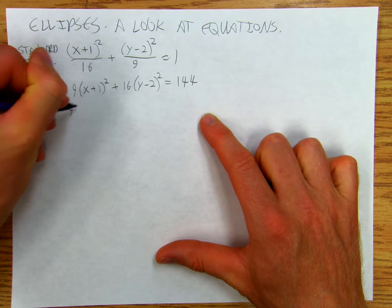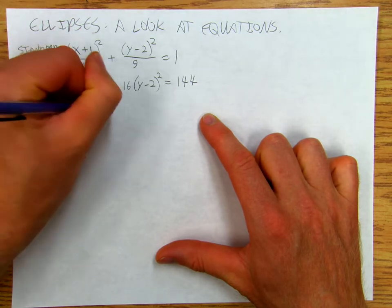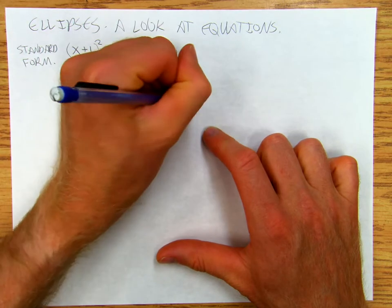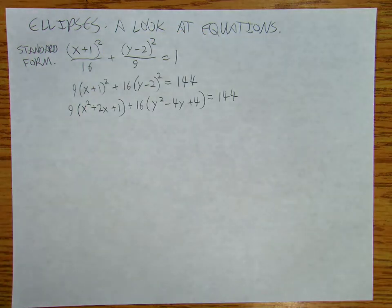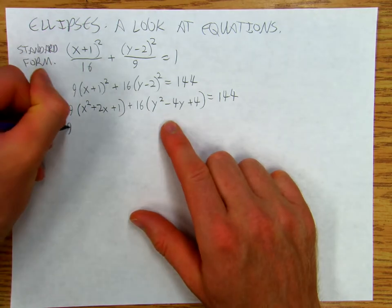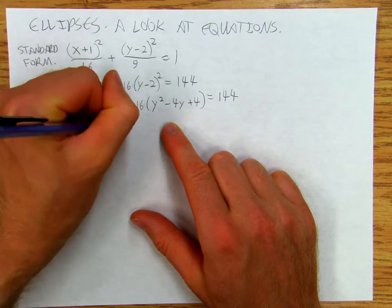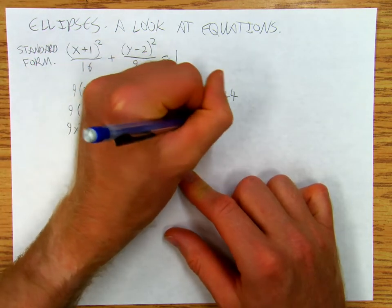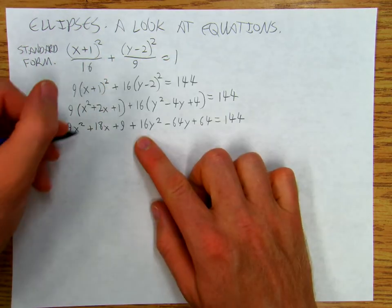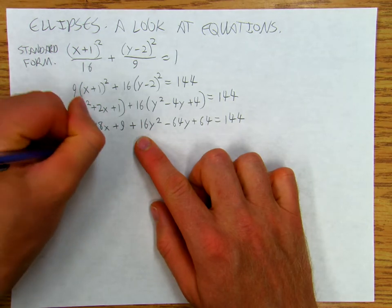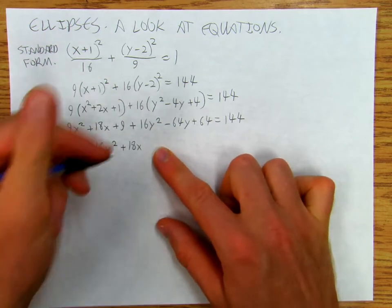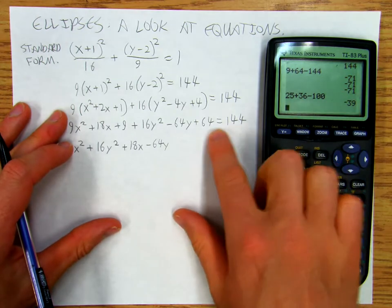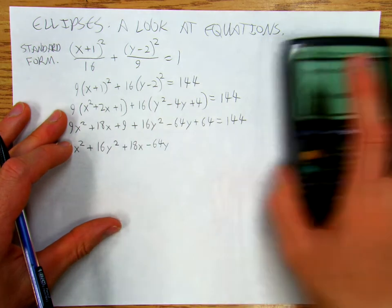Now I'm going to distribute it out — I'll FOIL that — so I get x² plus 2x plus 1, plus 16y² minus 4y plus 4, equals 144. Then distributing the 9 and the 16, I get 9x² plus 18x plus 9, plus 16y² minus 64y. Then I rewrite it: 9x² plus 16y² plus 18x minus 64y, and then 144 minus 64 is 80, minus 9 is 71 — moving that over.